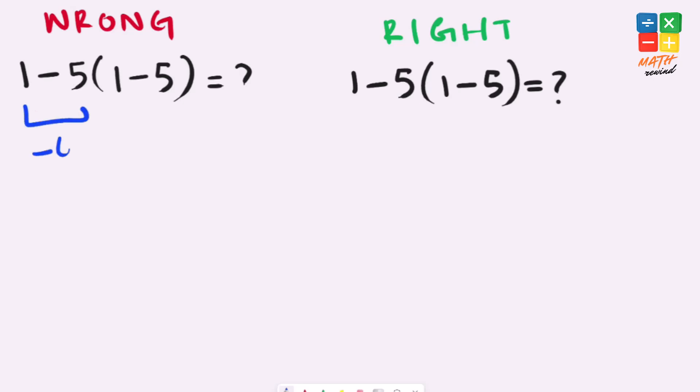1 minus 5 equals negative 4, and 1 minus 5 here also equals negative 4. Negative 4 times negative 4 gives us positive 16, but this answer is not correct because according to the order of operations...